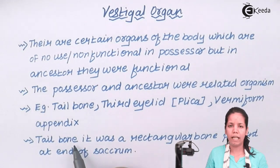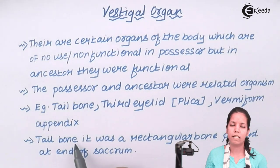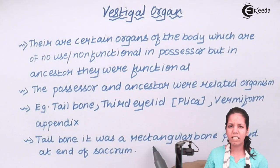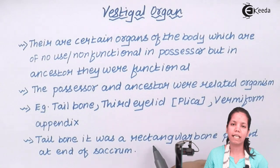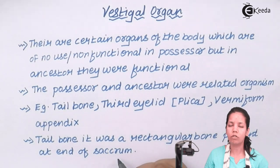Now if we talk about the tailbone: we as modern man or Homo sapiens sapiens do not possess a tailbone or coccyx. The tailbone can be simply described as a triangular bone formed by the fusion of a certain number of bones — precisely, the fusion of four bones — and it is always present at the end of your sacrum region in your vertebral column.